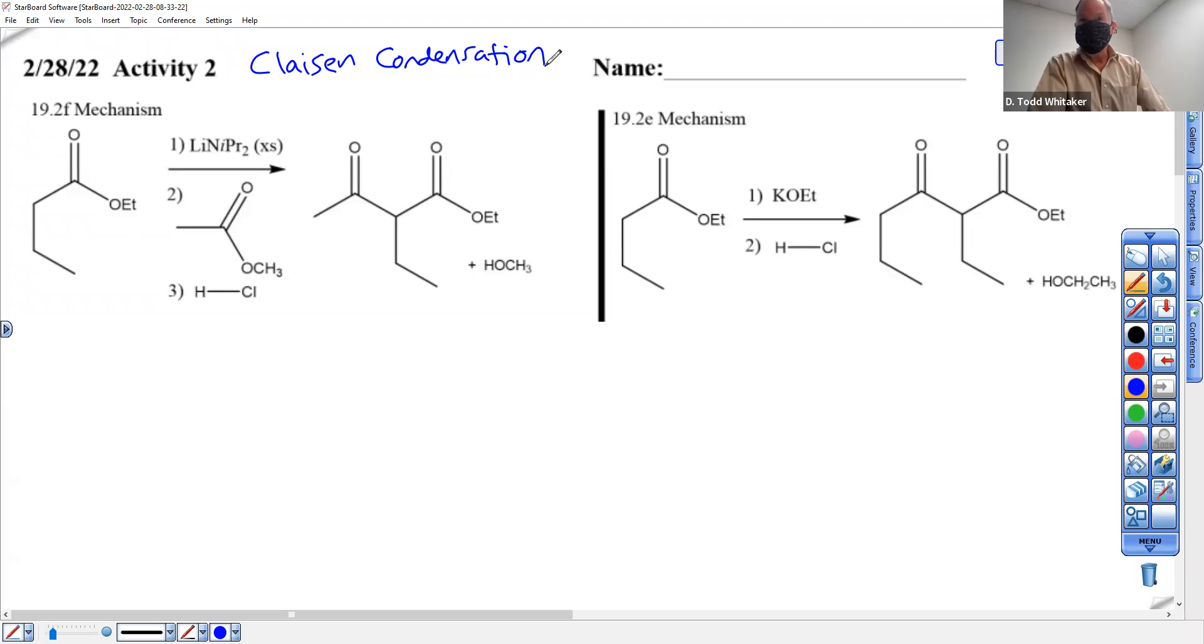So first we have to make our enolate, and in step two, I see an ester, don't you? Yep, and that makes this a Claisen. And step three, there's some cool stuff going on. All right, talk about step three when we get there.